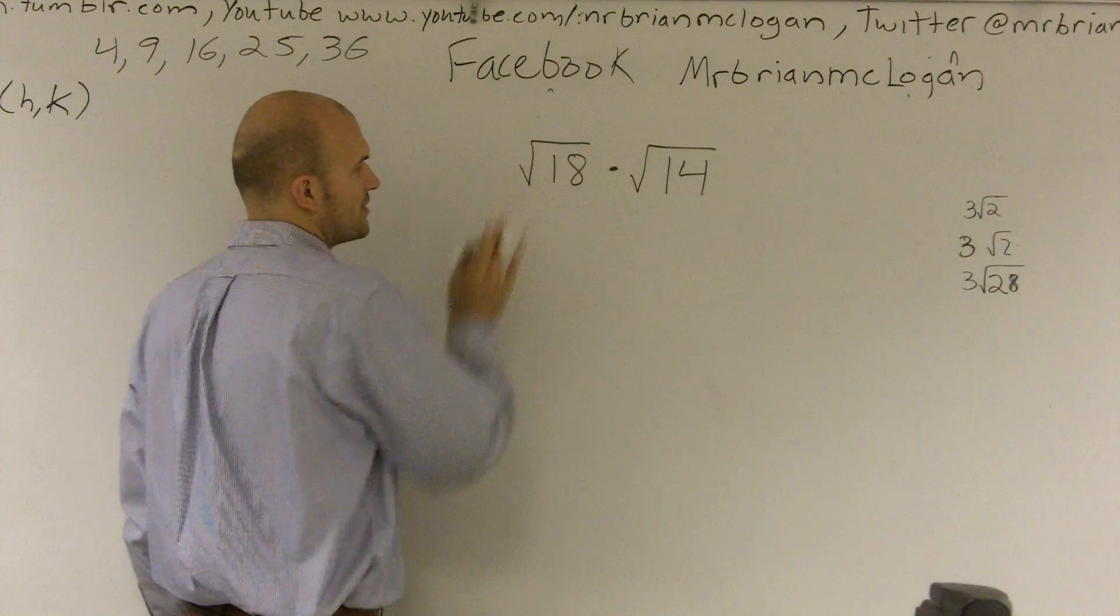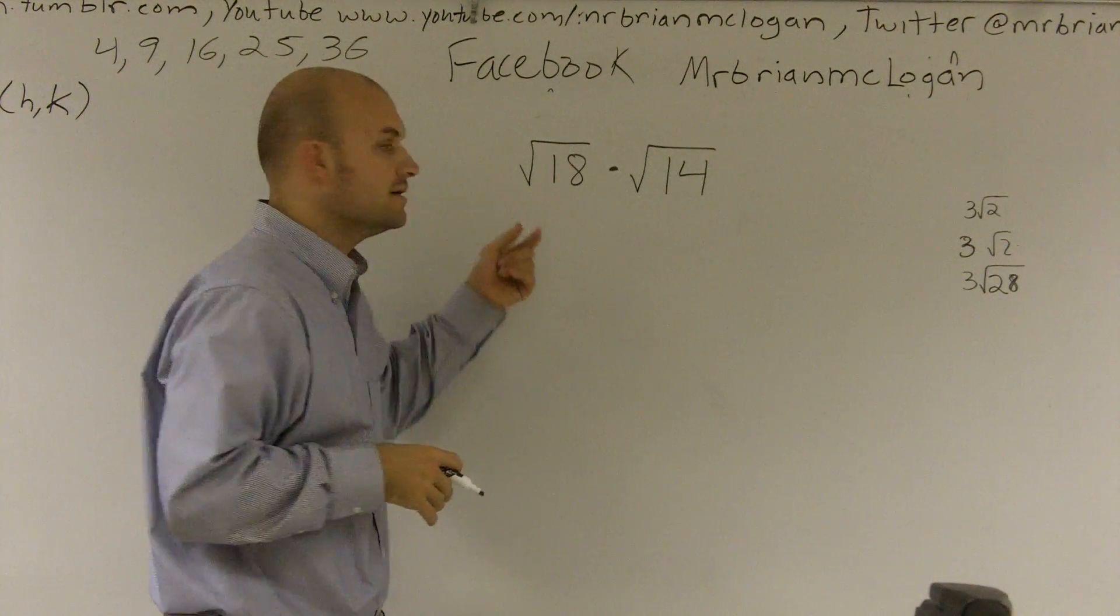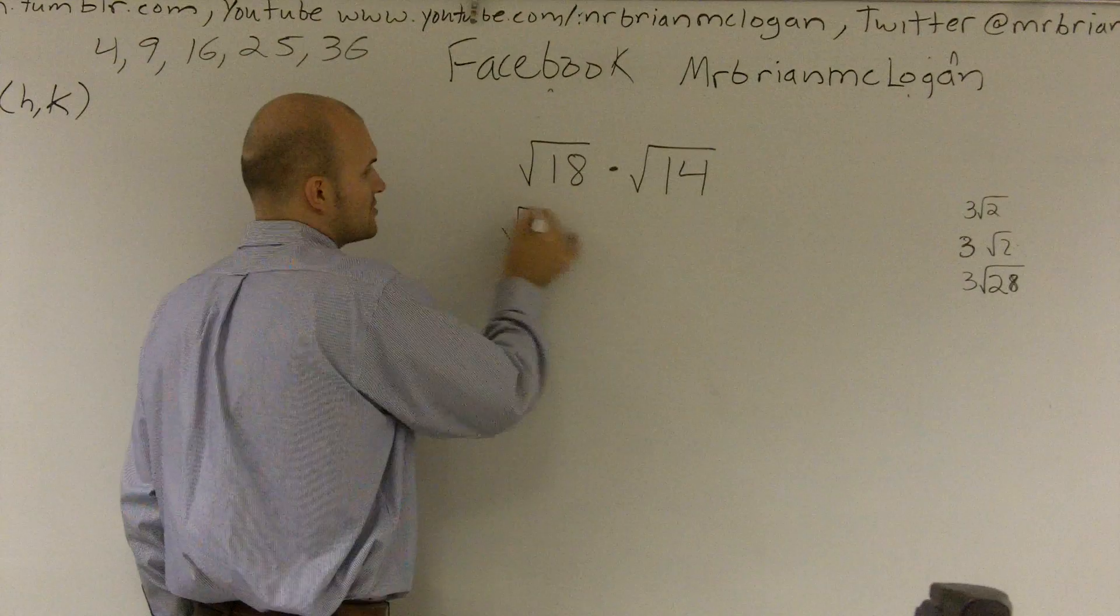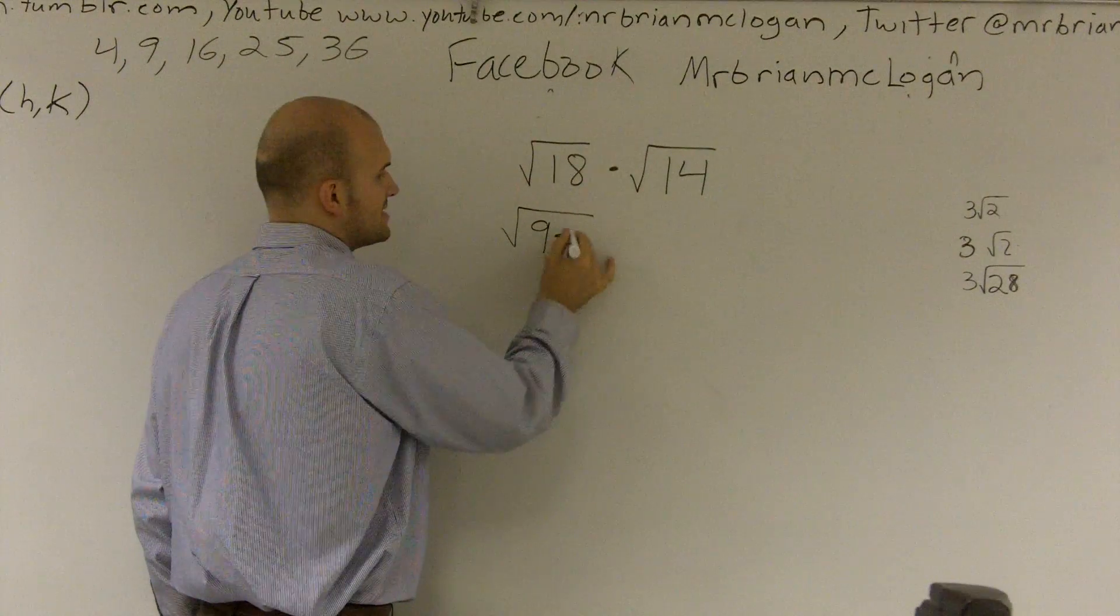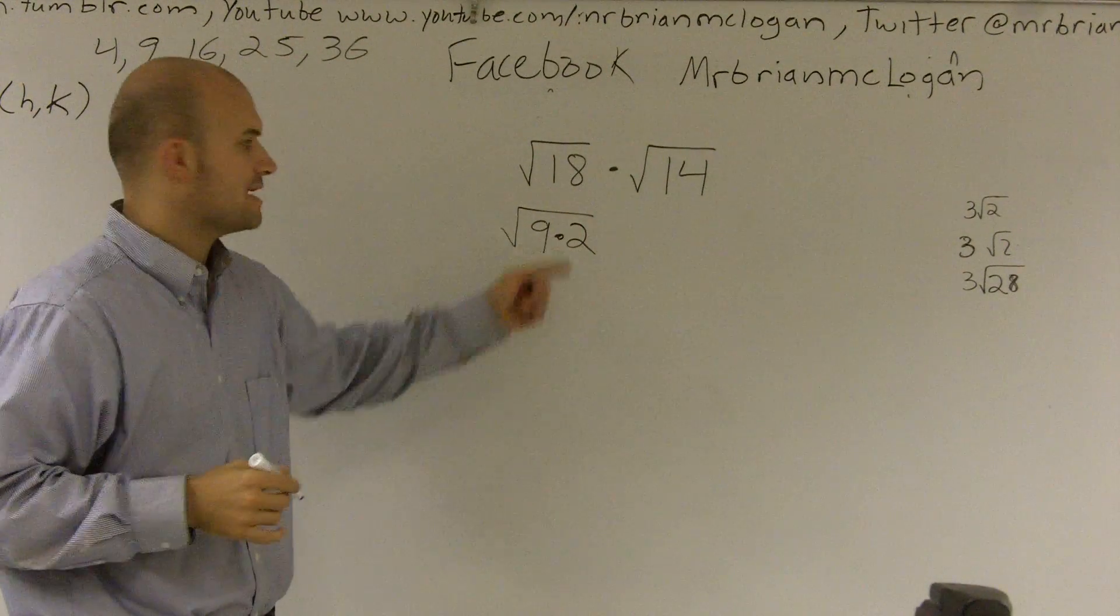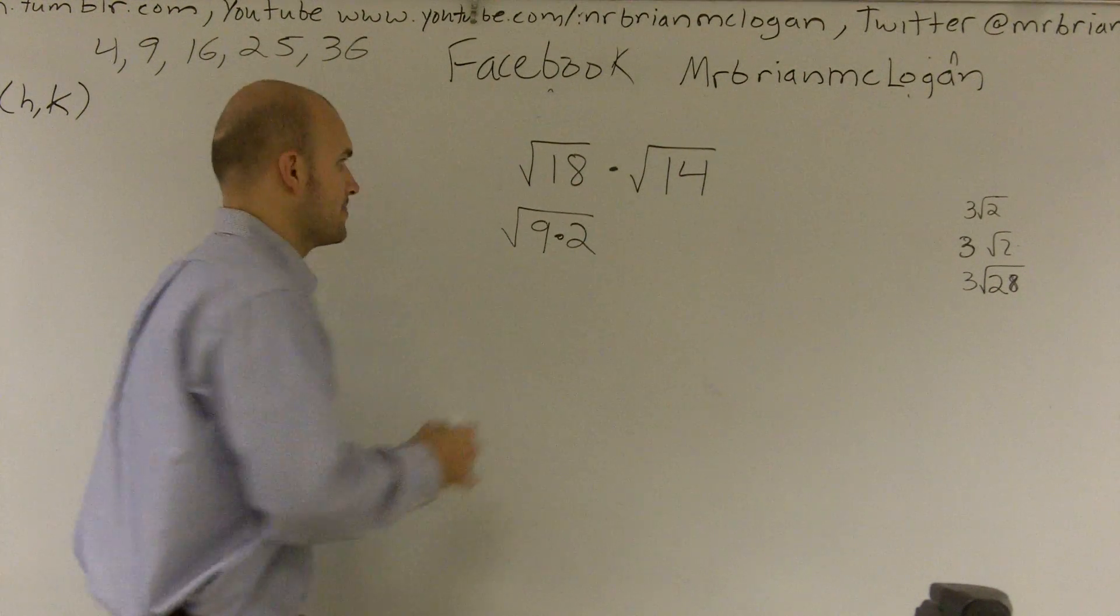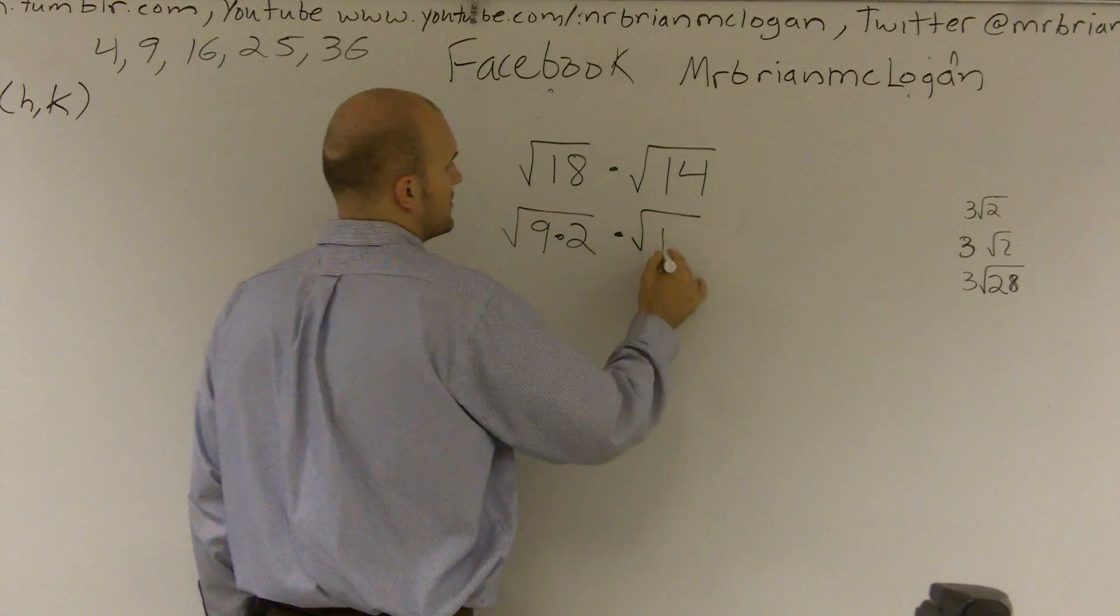What square number evenly divides into 18? And I figure out that 9 evenly goes in there two times. So I'm going to rewrite 18 as a product of a square number times another number. So I can rewrite 18 as square root of 9 times 2 times square root of 14.